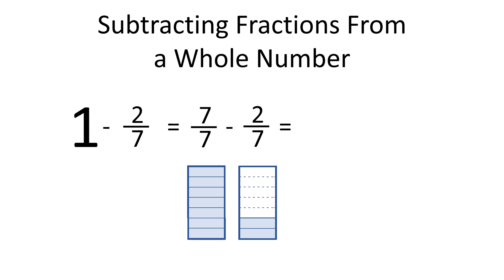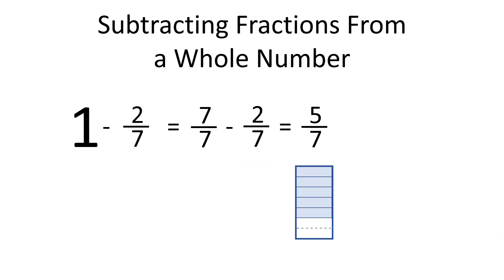As both fractions have the same denominators, we only subtract numerators. Thus, 7 minus 2 is 5. And we have 5 over 7 as the denominator does not change.